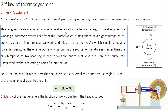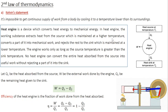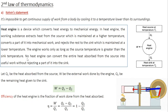A heat engine is a device which converts heat energy into mechanical energy, and it has three major components: a heat source, a heat sink, and a working substance. The working substance extracts heat from the source, which is maintained at a higher temperature, converts a part of this heat energy into mechanical work, and rejects the rest to the sink, which is maintained at a lower temperature. The engine works only as long as the source temperature is greater than the sink temperature; once they are equal or the sink is hotter, the engine stops working.